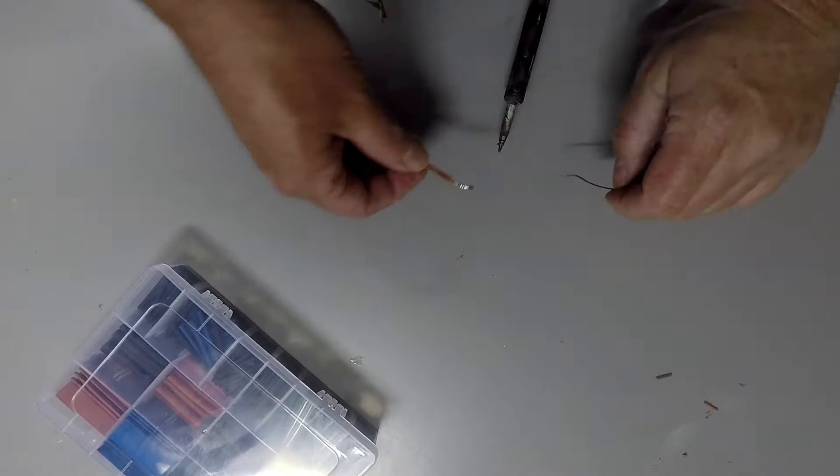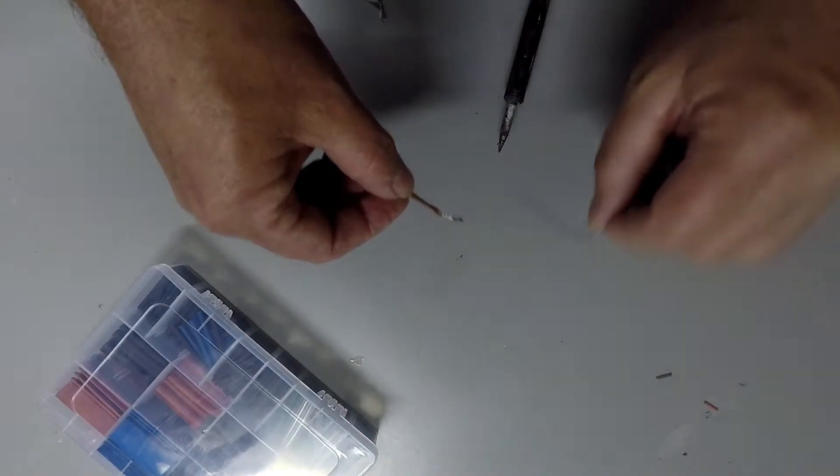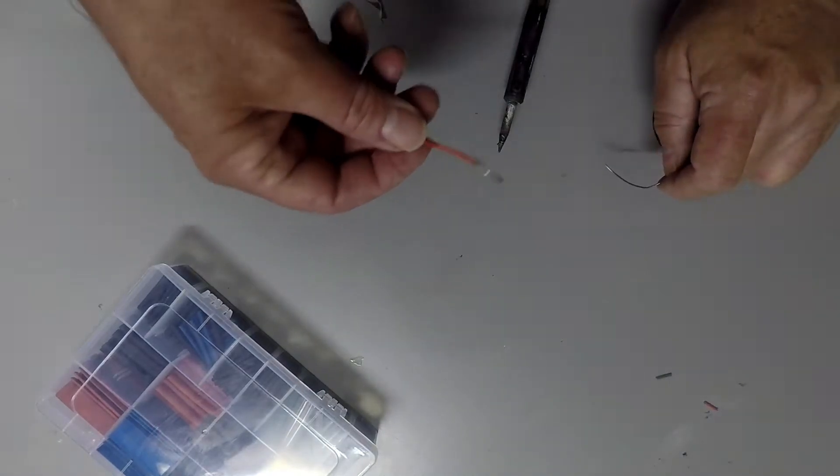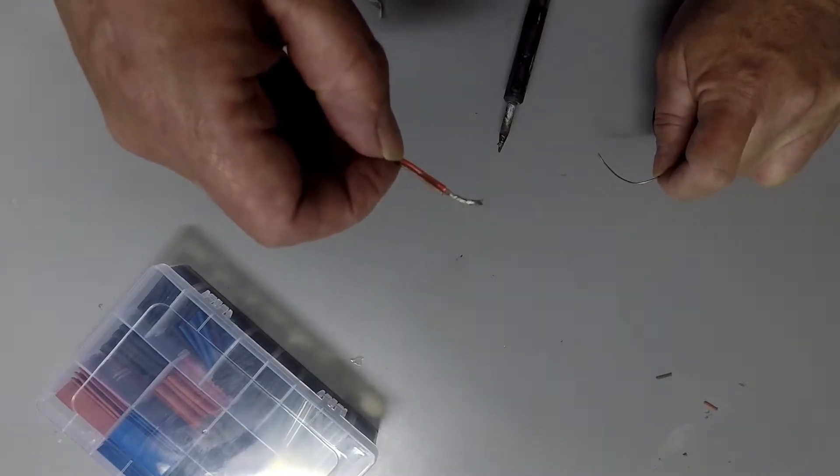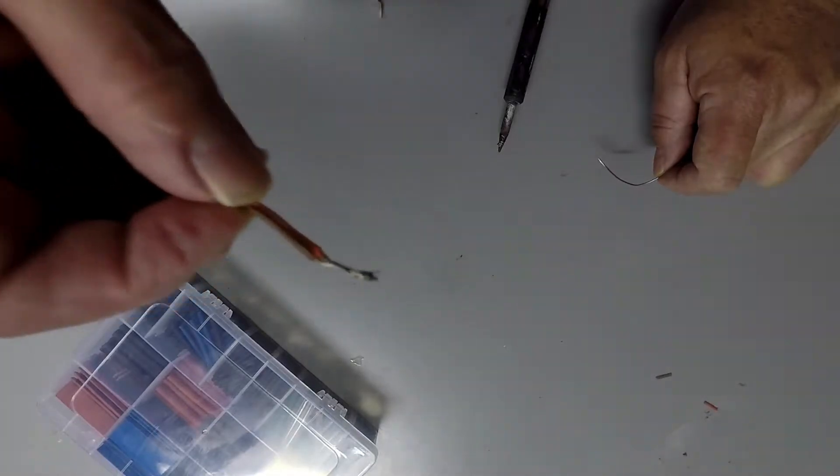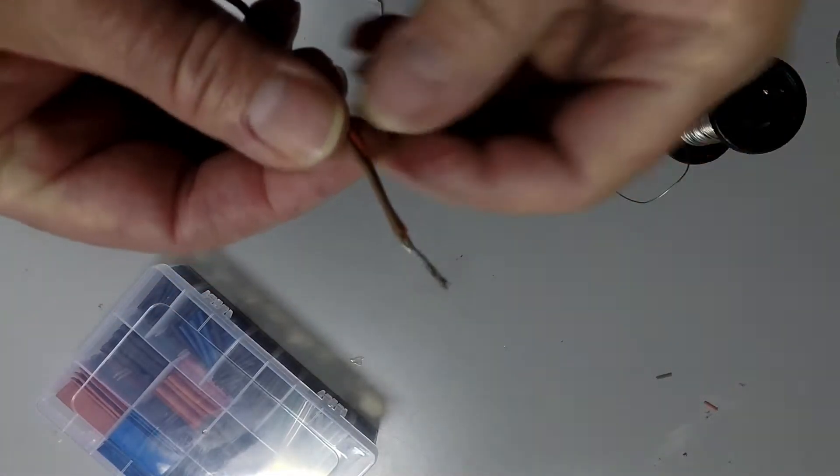You'll notice I'm trying to actually touch the solder on the metal I'm trying to solder together and not the soldering iron. The soldering iron will melt solder all day. But if you're not melting solder into what you're trying to solder, then it's not going to be as good. And if you have a look at that, it's melted in really nicely. That's not coming apart in a hurry.